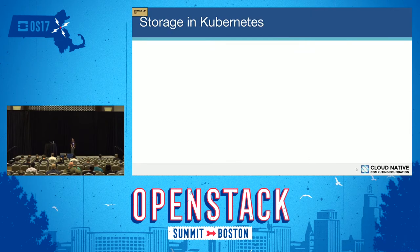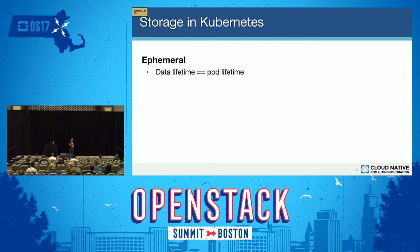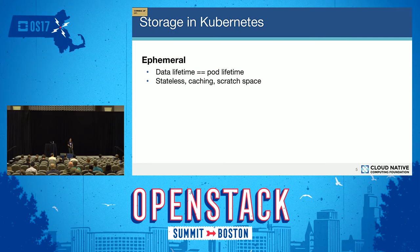Now I'll give a brief overview of storage in Kubernetes. There are two main types of storage. The first is ephemeral storage, where the data's lifetime is the same as the pod's lifetime. If the pod dies, restarts, or gets moved to another node, the data in the ephemeral storage also gets deleted along with the pod. Ephemeral storage is mostly used for stateless use cases — caching and scratch space.